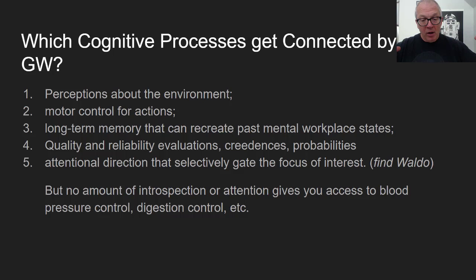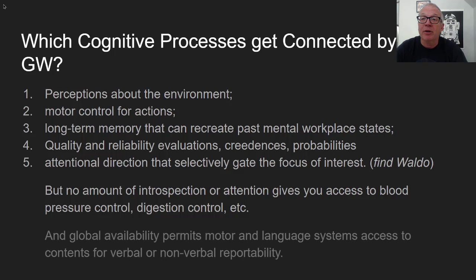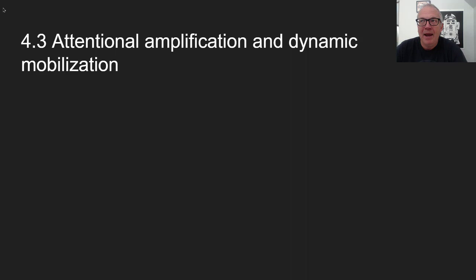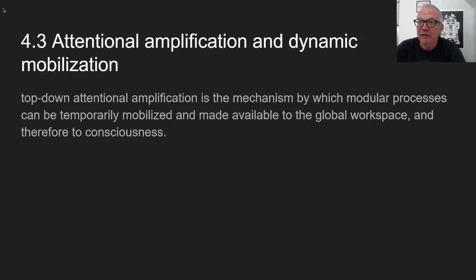That's how they're triangulating on what things can be in consciousness versus cannot — it has to do with activation patterns across these transverse long-distance neurons in the brain. Global availability permits motor and language systems access to contents for verbal or non-verbal reportability. They call this 'attentional amplification and dynamic mobilization.'